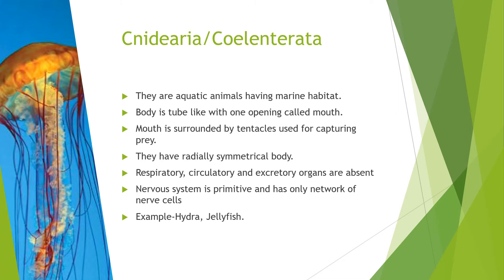Next, Cnideria. These are also aquatic and the body is tube-like with one opening called a mouth, surrounded by tentacles — thread-like structures used for catching prey. They have a radially symmetrical body. Respiratory, circulatory, and excretory organs are absent. The nervous system is primitive — only a nerve network of nervous cells. Examples are Hydra and jellyfish.